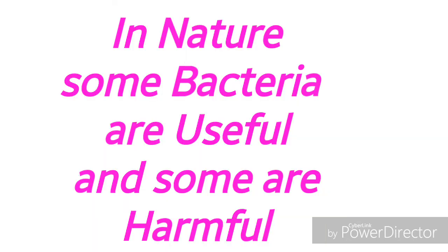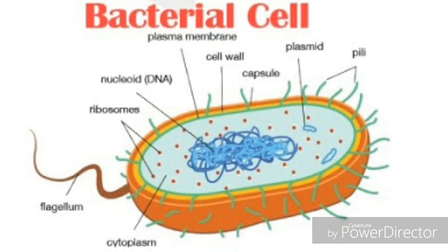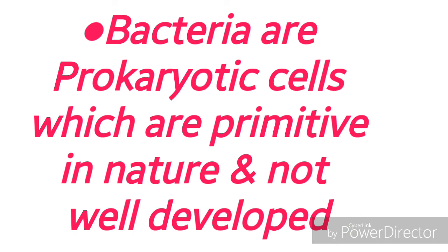In bacteria, some are useful and some are harmful and disease-causing. You can see here the structure of a bacterial cell. It is a prokaryotic cell which is not much developed — you will not find a prominent nucleus in its structure. You will observe genetic material but no specific nucleus. A hair-like structure called flagellum will be seen in bacteria, and they contain a cell wall.